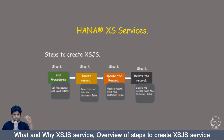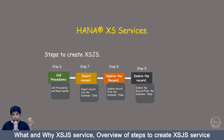In Step 6, I am going to explain how to call a procedure in our XS JS service, how to pass an input parameter to the procedure, and how to read the records from the output parameter of the procedure and return that result to the user.